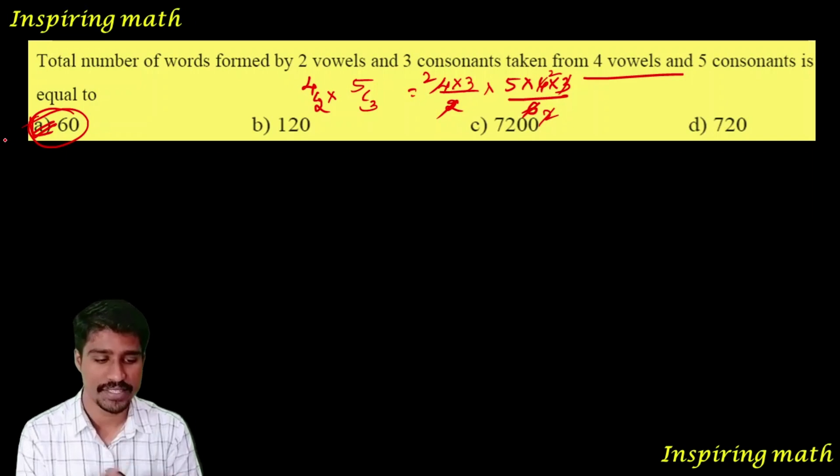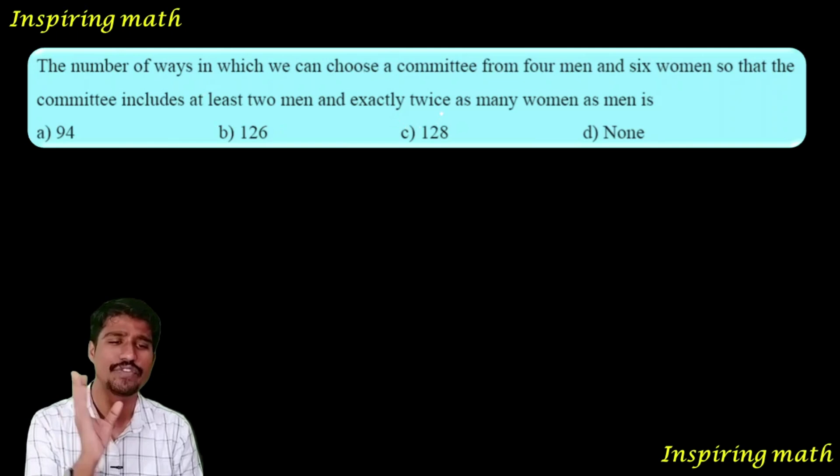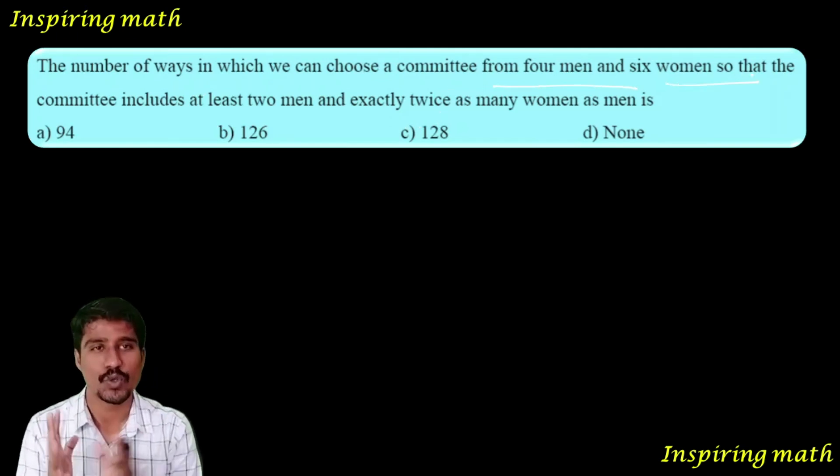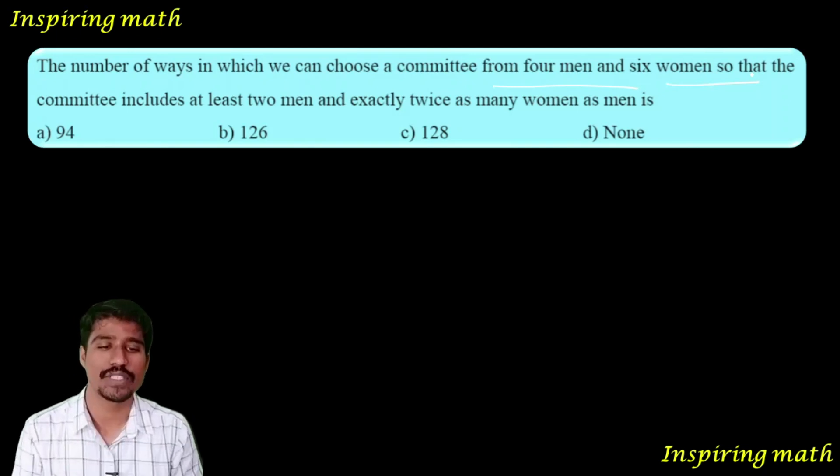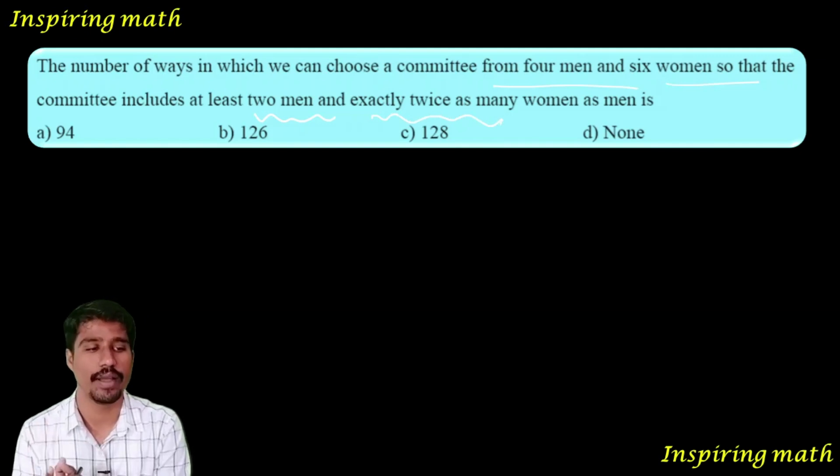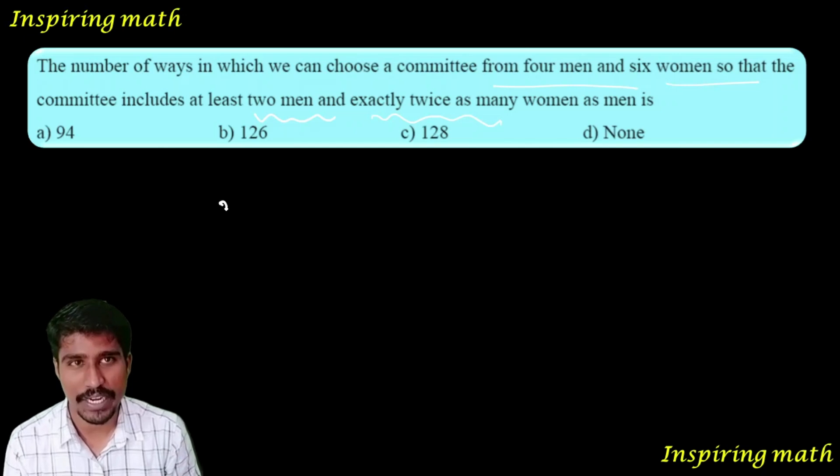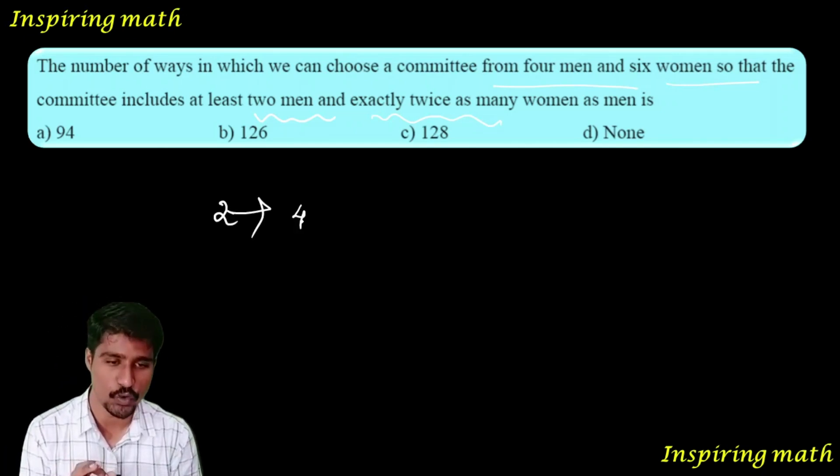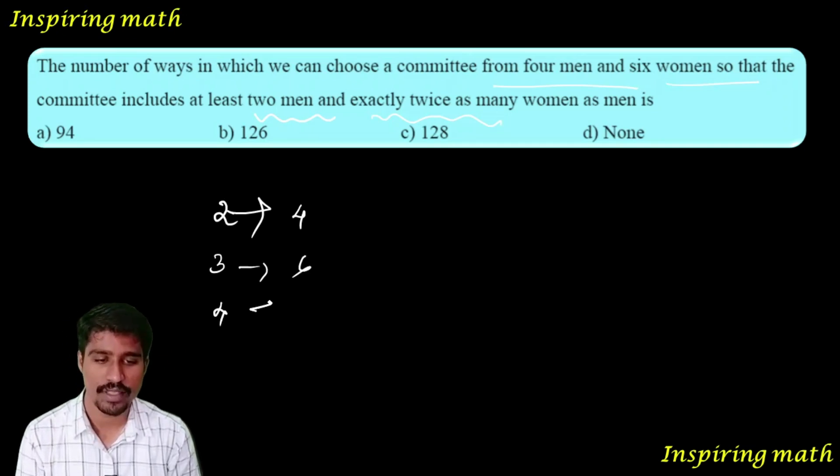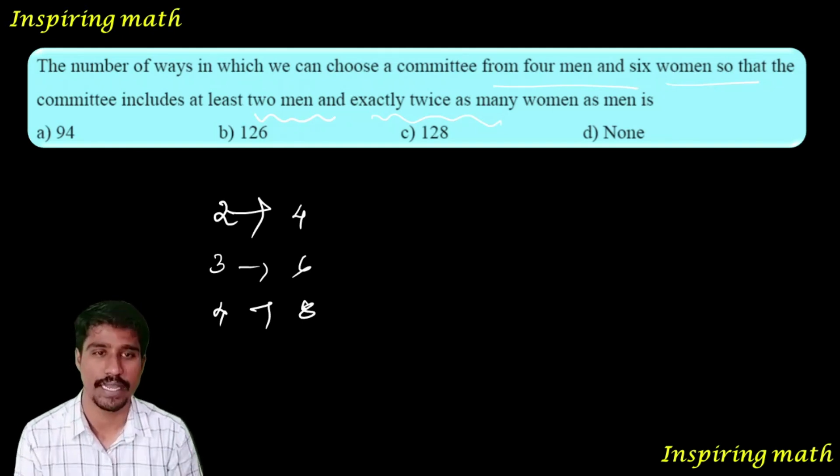The number of ways in which we can choose a committee from 4 men and 6 women so that the committee includes at least 2 men and exactly twice as many women as men. If 2 men, then 4 women. If 3 men, then 6 women. But we have only 6 women available.